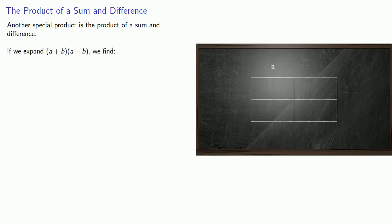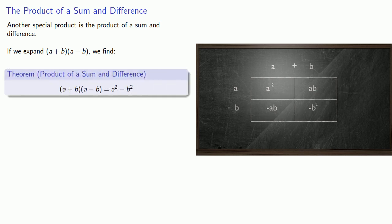Another special product is the product of a sum and a difference. If we expand (a + b)(a - b), we find that the two mixed terms ab and -ab will cancel each other out, and so we end up with a² - b².